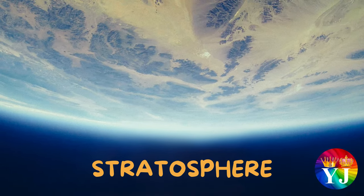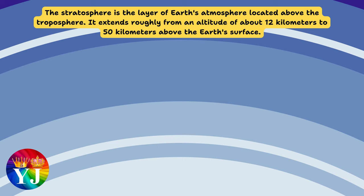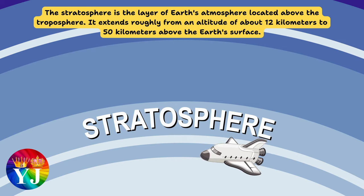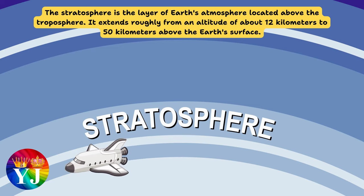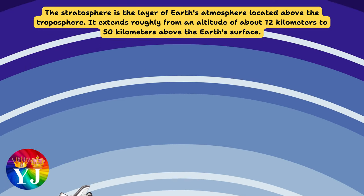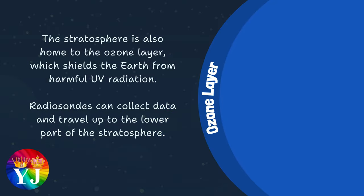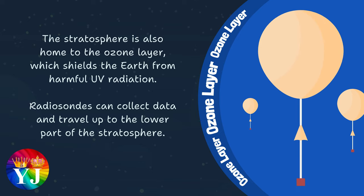The stratosphere is the layer of Earth's atmosphere located above the troposphere. It extends roughly from an altitude of about 12 kilometers to 50 kilometers above the Earth's surface. The stratosphere is also home to the ozone layer, which shields the Earth from harmful UV radiation. Radiosondes can collect data and travel up to the lower part of the stratosphere.